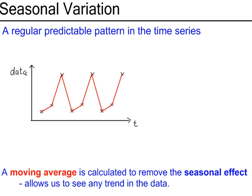For example, you would expect supermarket sales to be the highest on a Saturday and on a Sunday, and lower during the week. That's an example of Seasonal Variation, where you see a regular pattern in the data. Seasonal Variation is not limited to the seasons of the year, so we're not just looking at Winter, Spring, Summer, Autumn. It can be difficult to see any underlying trend in the data when you have this regular pattern.